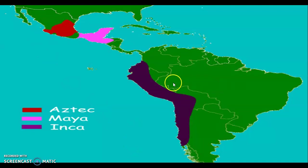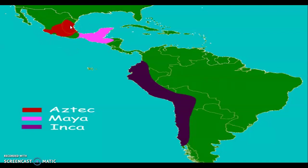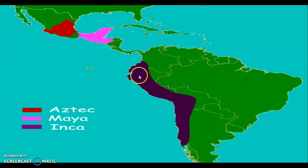In red, according to our map legend, are the Aztecs. The Aztecs lived in what is present-day Mexico. The capital of the Aztecs is the present-day capital of Mexico — Mexico City. In pink are the Mayans, on the Yucatan Peninsula, more so Central America. And in purple, down to the south in South America, in present-day Peru and Chile, are the Incans.